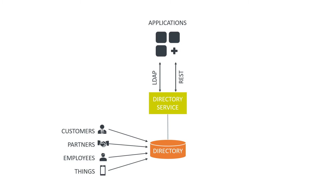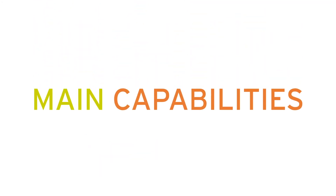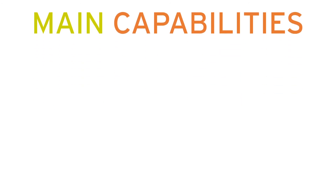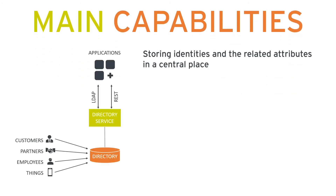It is where applications that need information about customers, partners, et cetera, can get this information, and where they can also authenticate. So for most directories, you can authenticate against them. Key capabilities of such a directory service start with storing identities and related attributes in a central place. You might have multiple directories, but usually directories cover a range of applications and a range of use cases.